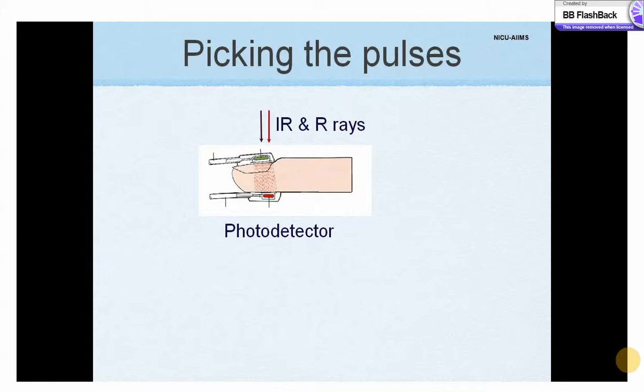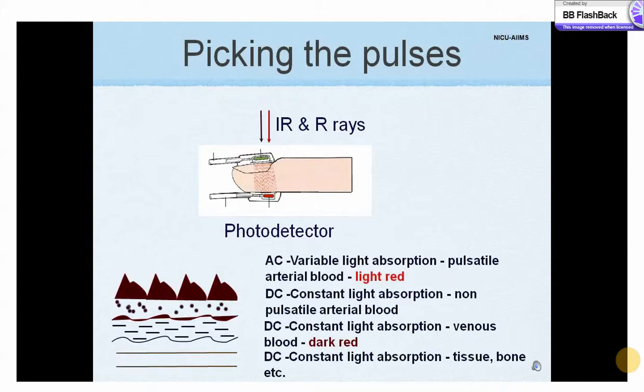Each pulse oximeter probe contains two light emitting diodes which emit red and near infrared wavelengths through a cutaneous vascular bed. A photodetector on the other side measures the intensity of transmitted light at each wavelength, from which the oxygen saturation is derived. This is based on data stored in the memory of the oximeter.